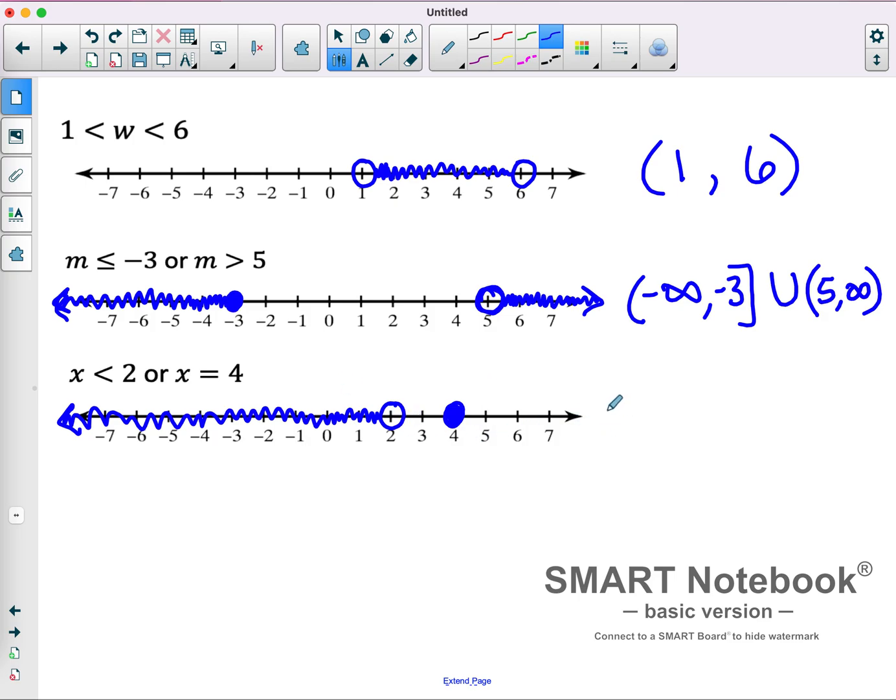In interval notation, that's parentheses, negative infinity, up to 2. 2 is still a parentheses because it's an open circle. Union.